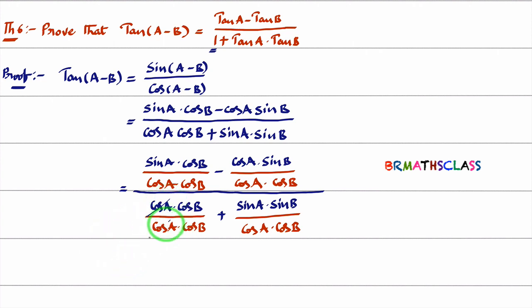You see here cos B will get cancelled, cos A will get cancelled. Now, I will write what is remaining. Sin A by cos A. What is sin A by cos A? We know that sin A by cos A is nothing but tan A.